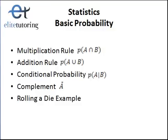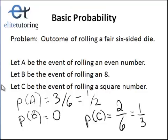If you haven't watched Part 1 yet, you'll probably want to stop now and go watch the Part 1 video. We did set up the events in that video, and event A was rolling an even number, event B was rolling an 8, and event C is rolling a square number, and we do have those individual probabilities there.